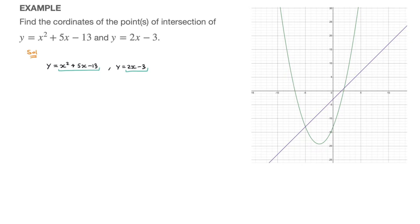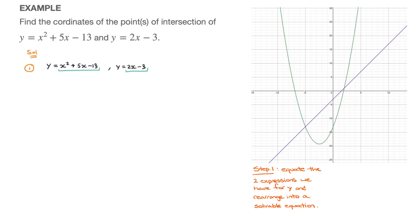Step 1: we're going to equate — in other words, set equal — x squared plus 5x minus 13 and 2x minus 3. So we write: x squared plus 5x minus 13 equals 2x minus 3. Now we have an equation which only contains x, and so we can solve this.